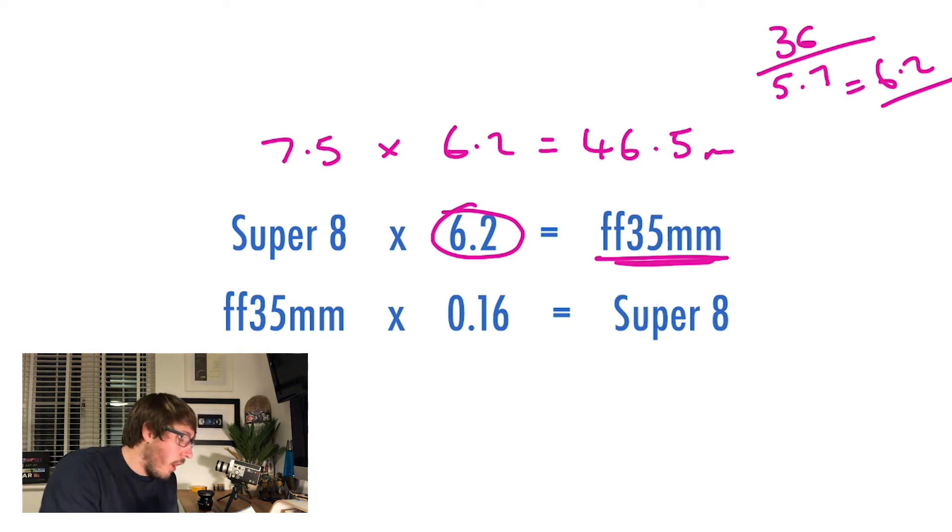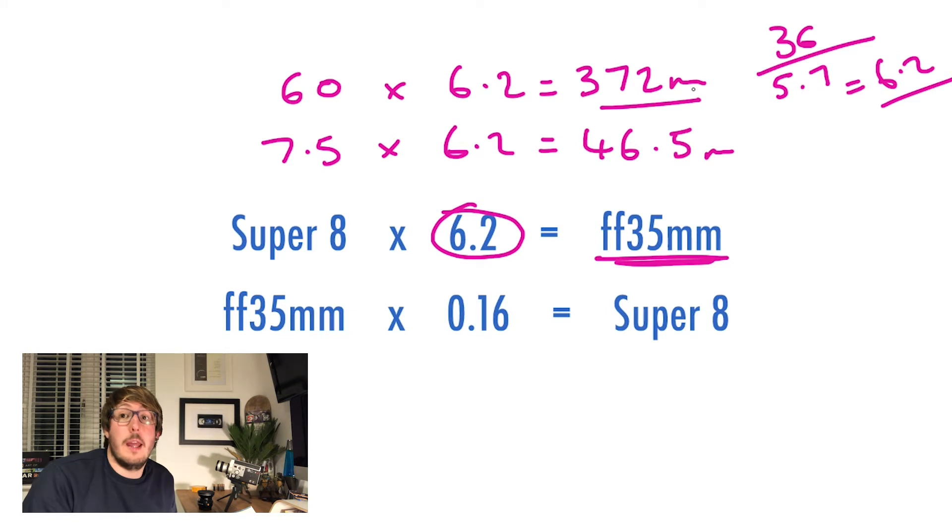On the other end, if I take my upper end, which is 60mm, and times that by 6.2, that gives us a whopping 372 millimeters. That's a long lens, a really long lens, and I was actually really pleasantly surprised by that. Straight away, this sum has already helped me quite a lot.